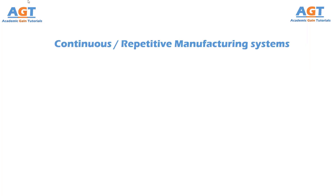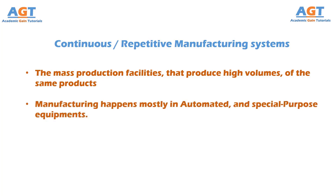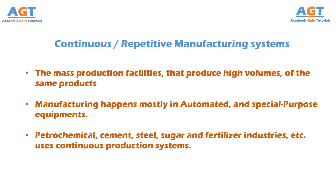Continuous production system, or continuous manufacturing system. These are also referred to as repetitive manufacturing systems. In other words, these are the mass production facilities that produce high volumes of the same products. In this case, manufacturing happens in automated and special purpose equipment. For example, petrochemical, cement, steel, sugar, and fertilizer industries use continuous production systems.